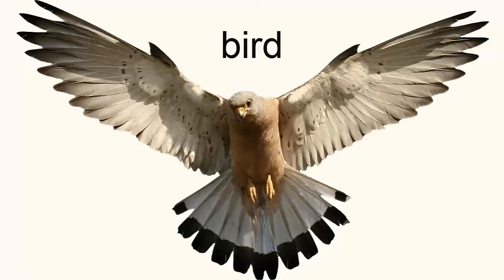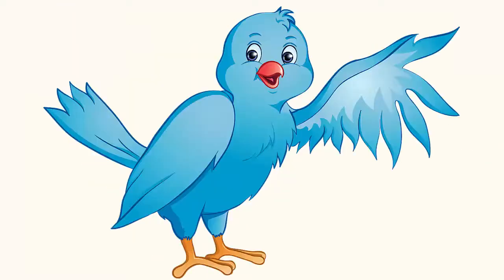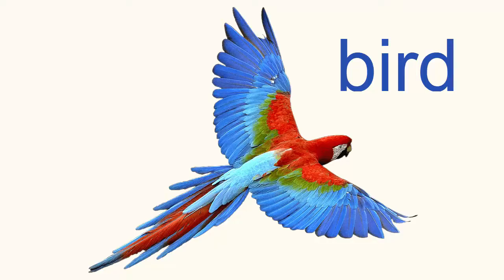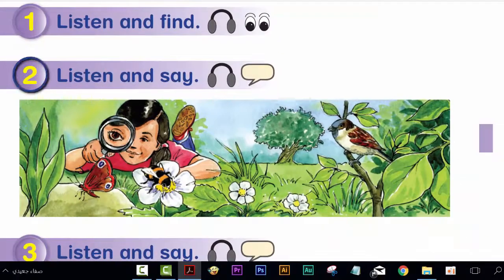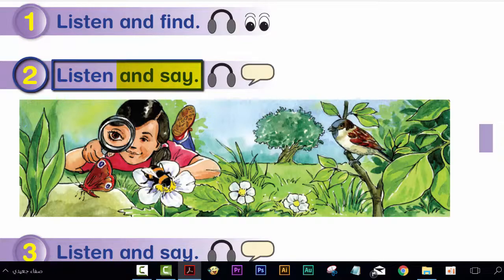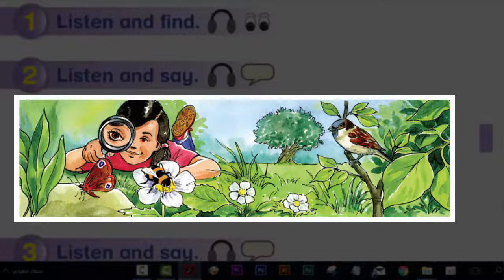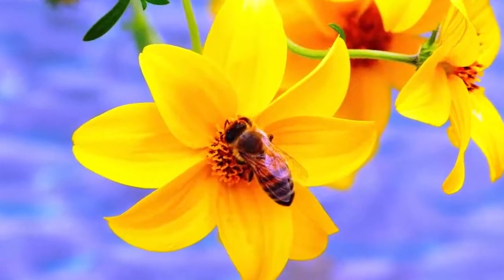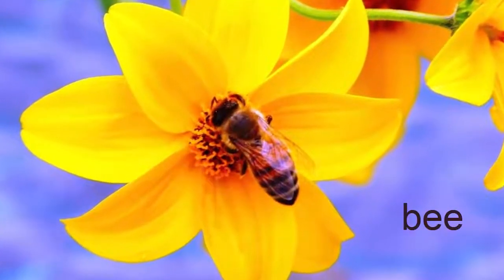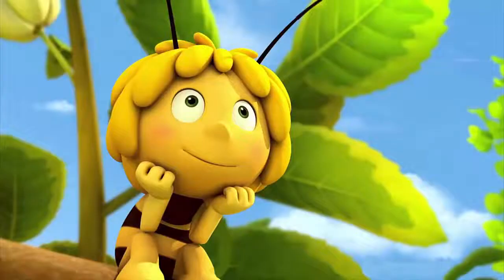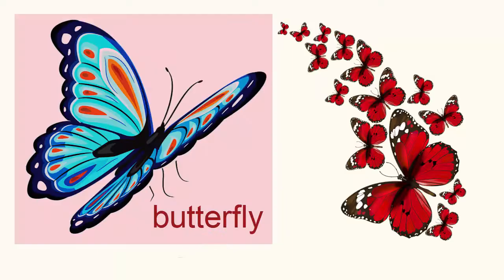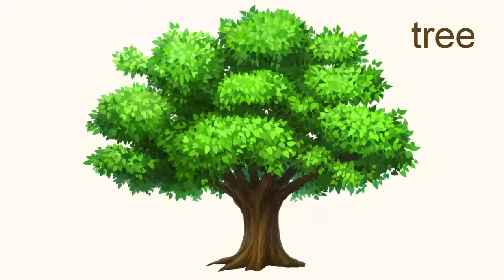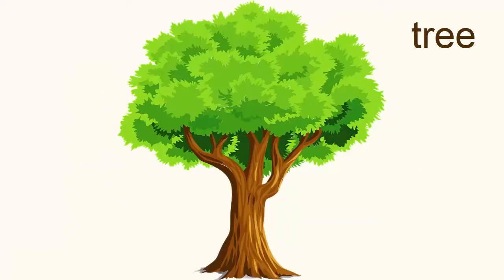This is a bird. A bird. This is a bird. A bird. Activity 2: listen and say. This is my garden. Look! This is a bee. A bee. This is a butterfly. A butterfly. This is a tree. A tree.